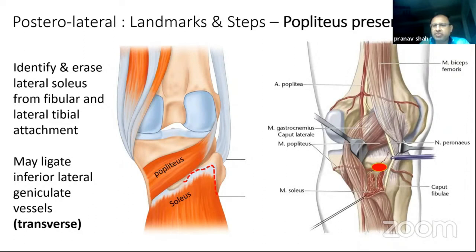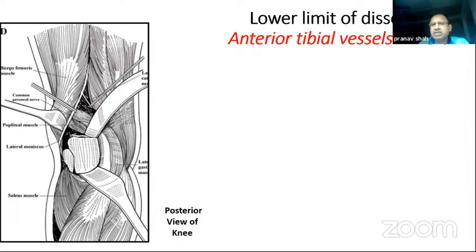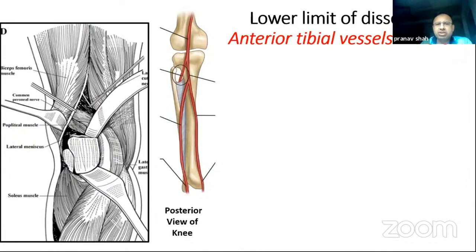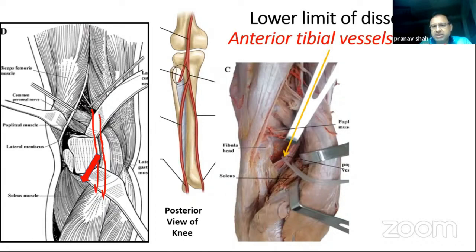The important caveat for the posterolateral window is the anterior tibial vessels, which originate from the popliteal vessels and enter the anterior compartment through the interosseous space. Looking at the posterior view of the knee, these are the anterior tibial vessels and how they arise from the popliteal vessels. On an anatomical dissection specimen, this shows where the anterior tibial vessels lie in relation to the head of the fibula.